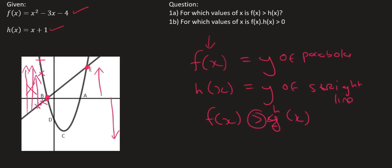If we look at the interval in between, so between the letters b and e, we can see that the straight line is above the parabola. Then, if we look at the little interval to the right, we can see that, once again, the parabola is above. So where is the parabola above? Well, it's above in this interval and this interval.